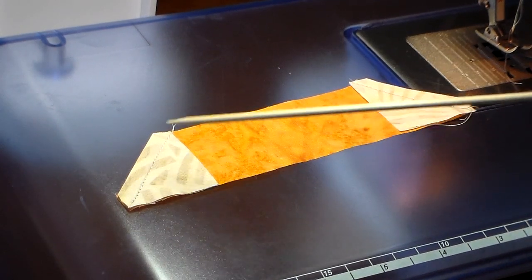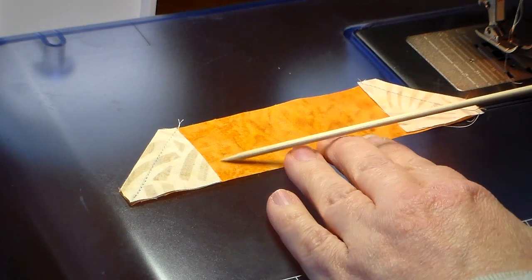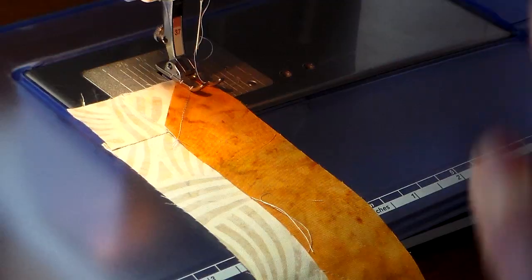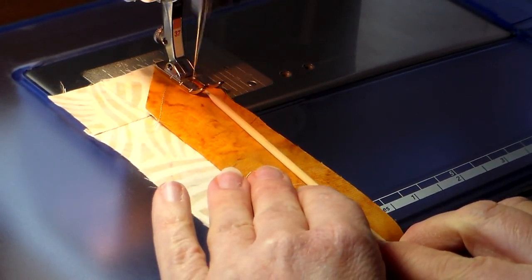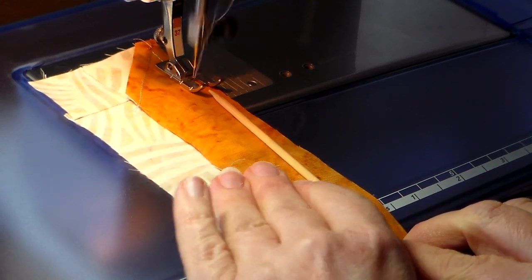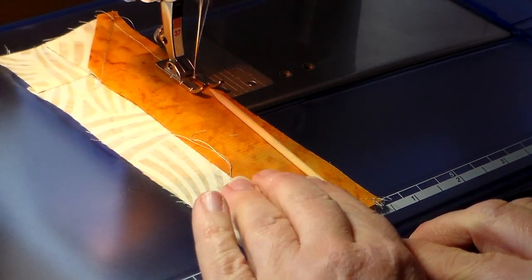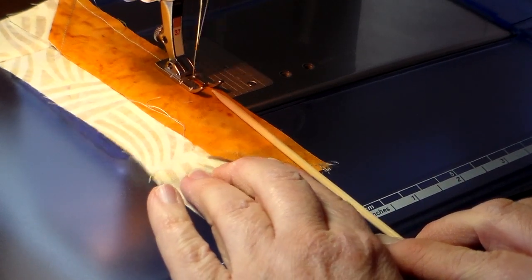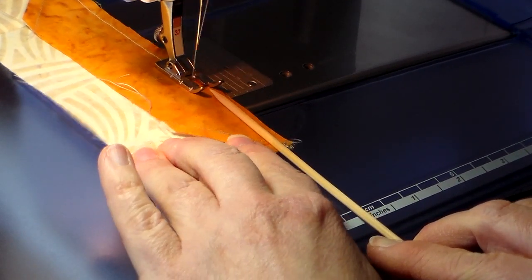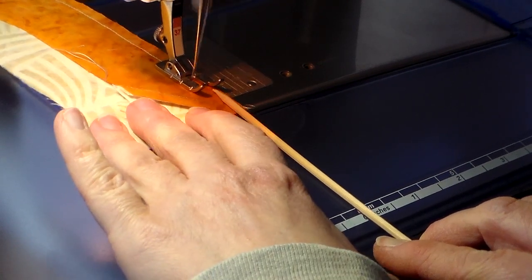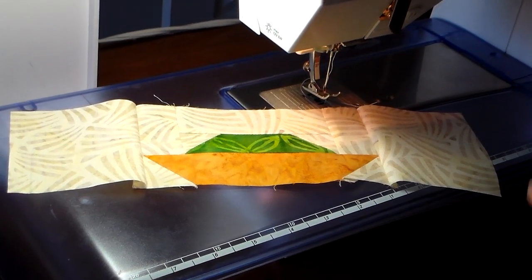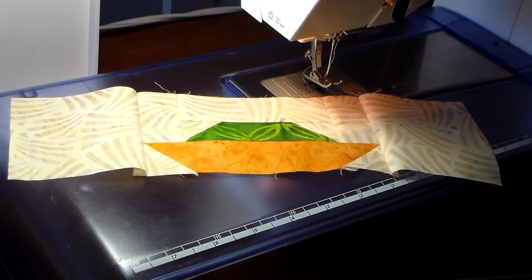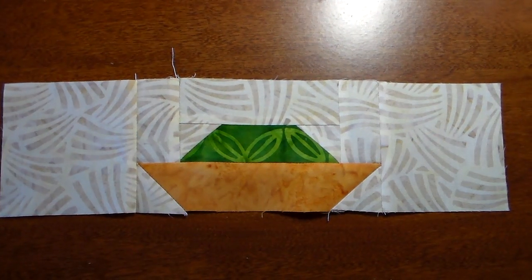I sewed along here and I cut the corners off and now I'm going to bend them back and iron them back. I've sewn on the two outside blocks. That completes the top section.